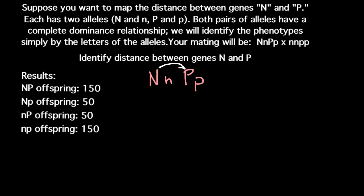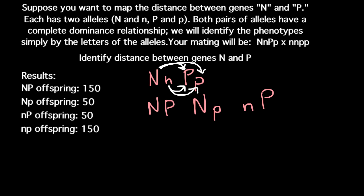The first variant would be capital N and capital P. The second variant would be capital N and small p. The third variant would be small n and small p. So this gives four types of gametes that this parent can produce. The second parent can only produce one type of gamete, which is small n and small p.